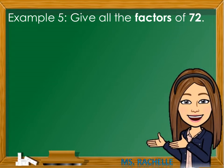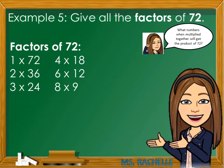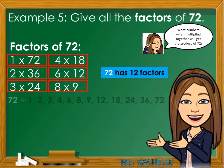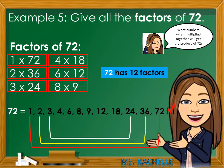Example number 5: Give all the factors of 72. Think, what numbers when multiplied together will get the product of 72? The factors of 72 are 1 times 72, 2 times 36, 3 times 24, 4 times 18, 6 times 12, 8 times 9. These are the only possible combinations to get the product of 72. Notice that 72 has 12 factors: 1, 2, 3, 4, 6, 8, 9, 12, 18, 24, 36, 72.